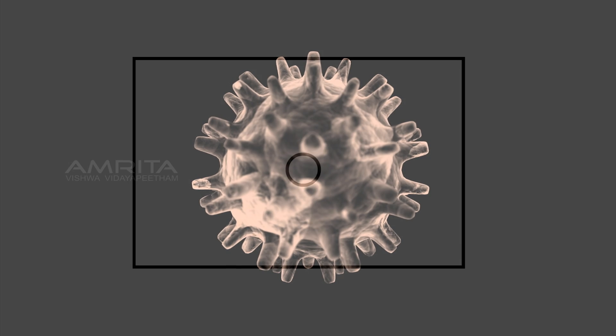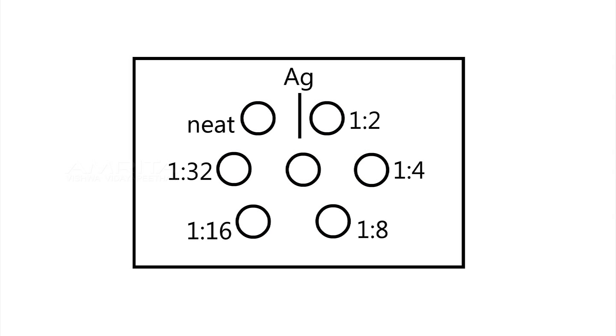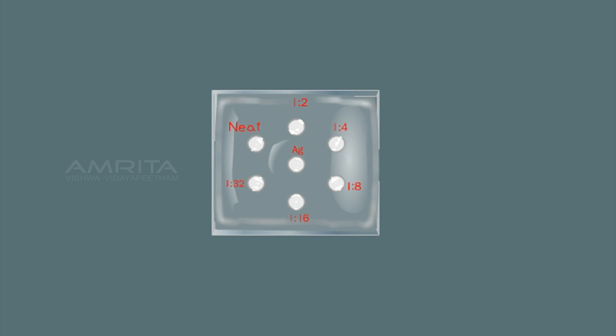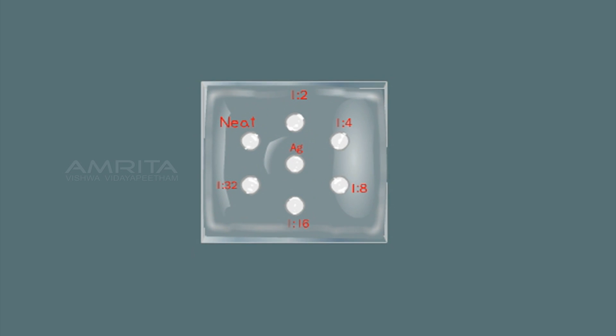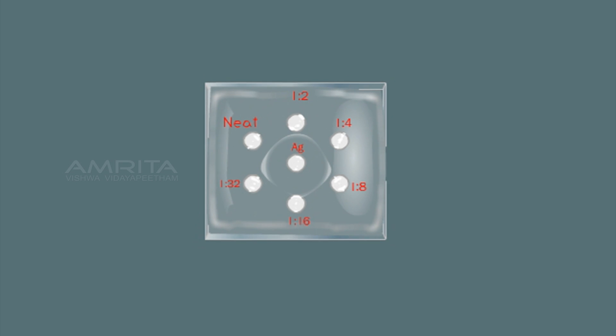In this procedure, the wells are filled with antigen and antibody and are allowed to migrate towards each other in a gel, and a line of precipitation is formed where the two reactants meet.